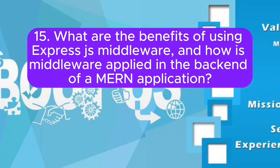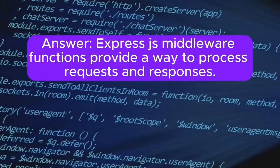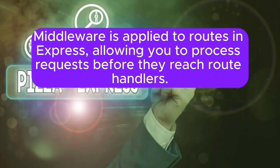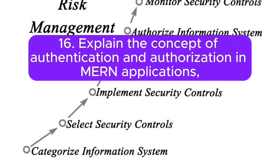15. What are the benefits of using Express.js middleware, and how is middleware applied in the back-end of a MERN application? Answer: Express.js middleware functions provide a way to process requests and responses. They can be used for tasks like authentication, logging, and data validation. Middleware is applied to routes in Express, allowing you to process requests before they reach route handlers.